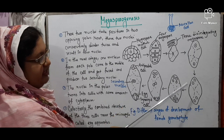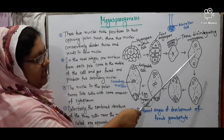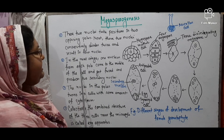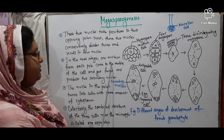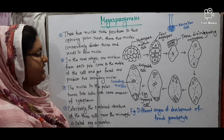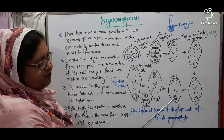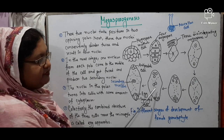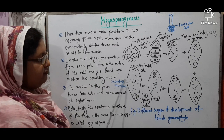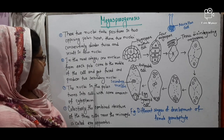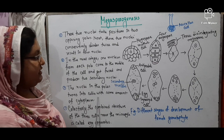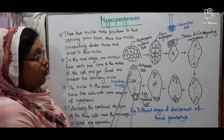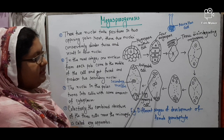Each of the two original nuclei divides twice, producing four cells at each pole. Then, one nucleus from each pole comes to the middle of the cell and they get fused to produce the secondary nucleus. The remaining nuclei in each pole, along with some cytoplasm, turn into cells.